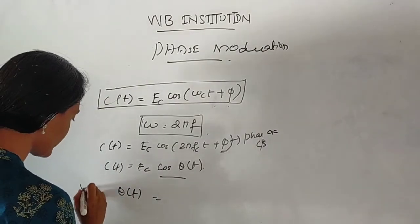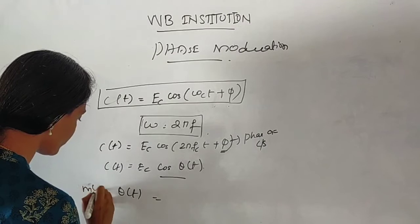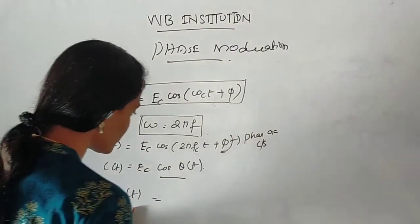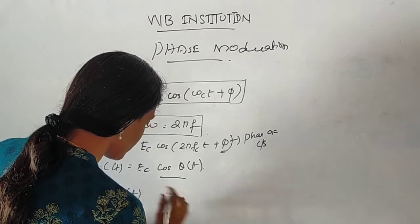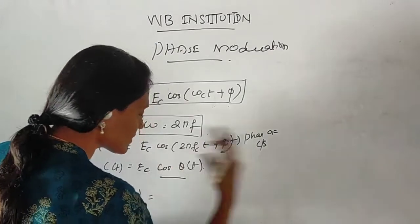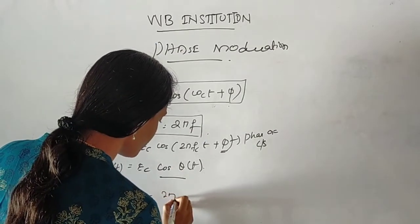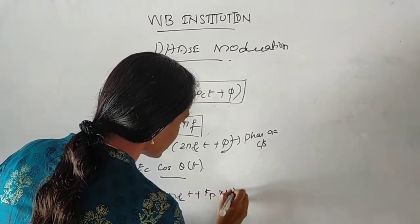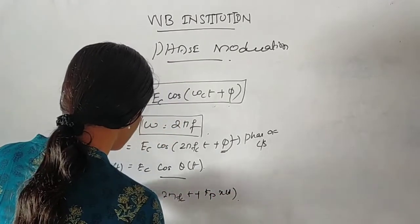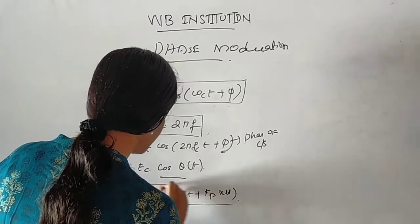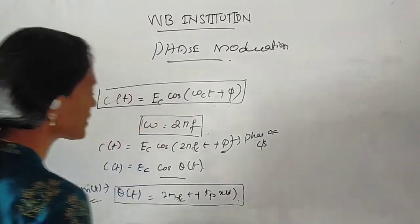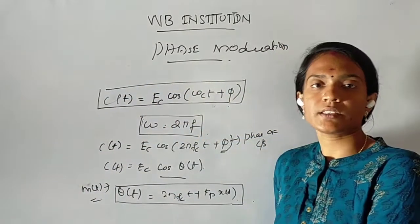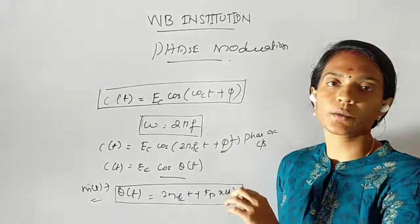If we have a modulating signal, the message signal m(t), then θ(t) is equal to 2πfc·t + kp·x(t). Here, kp·x(t) is the phase sensitivity — that constant kp is called the phase sensitivity.